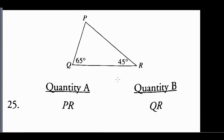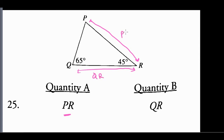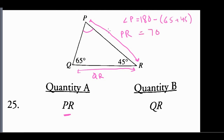The last question is a quantitative comparison question. Quantity A is PR and Quantity B is QR. The given angles are 65 and 45 degrees. Since all angles sum to 180, angle P equals 180 minus 65 minus 45, which is 70 degrees. Since 70 degrees is the largest angle in the triangle, the side opposite to it — QR — must be the largest side, so QR is greater than PR. The correct answer is B.